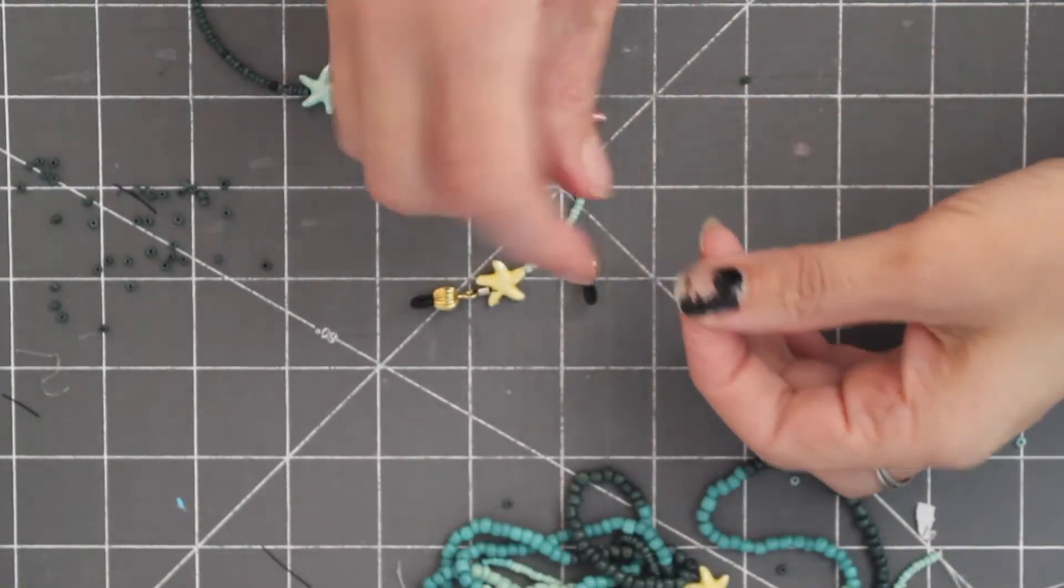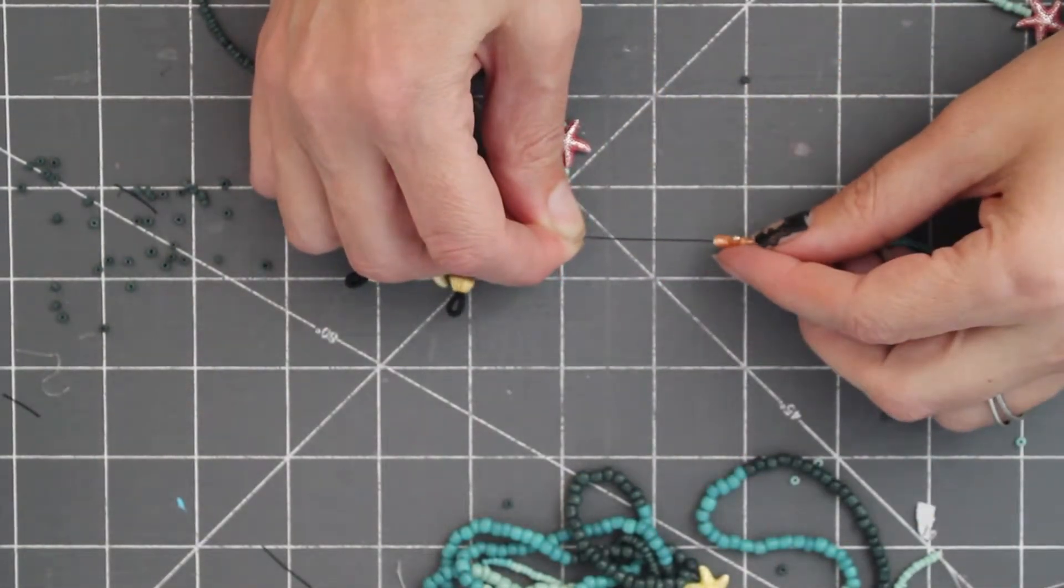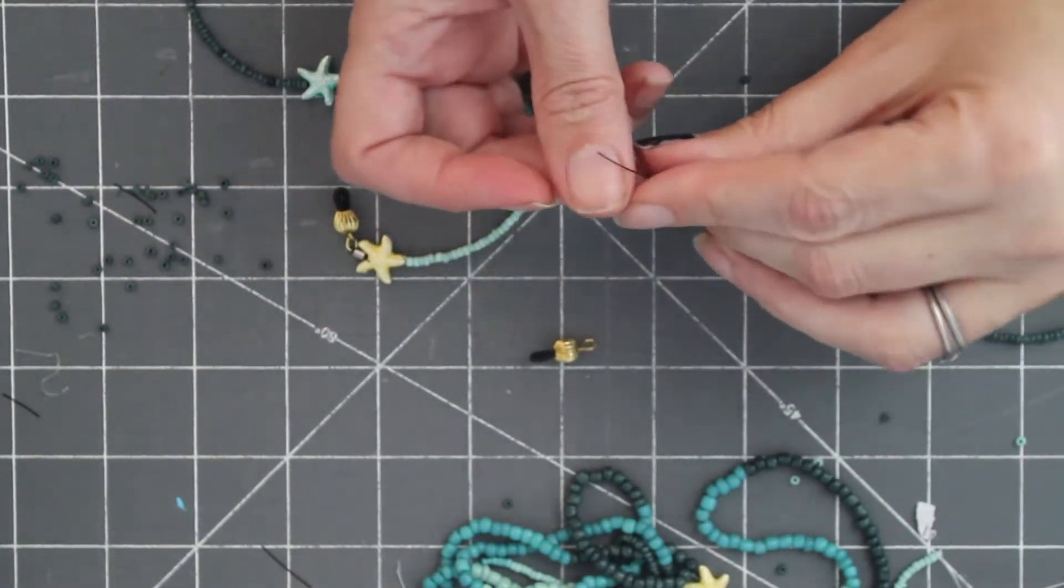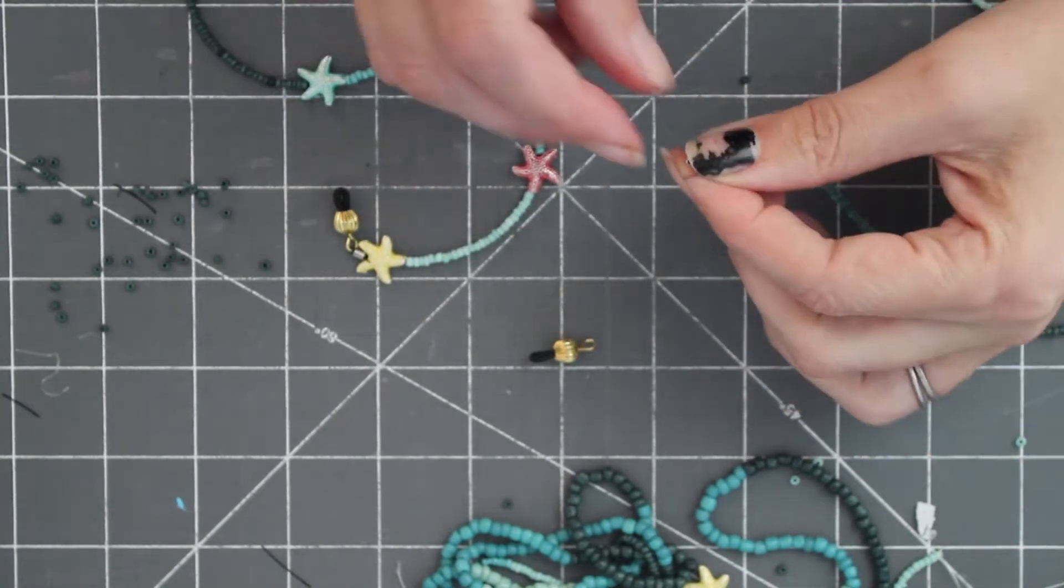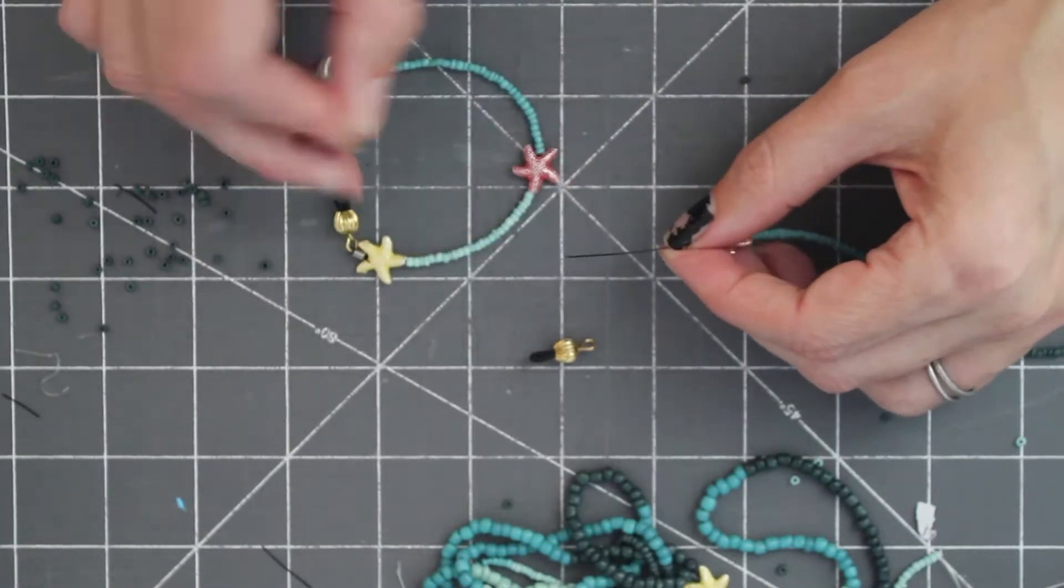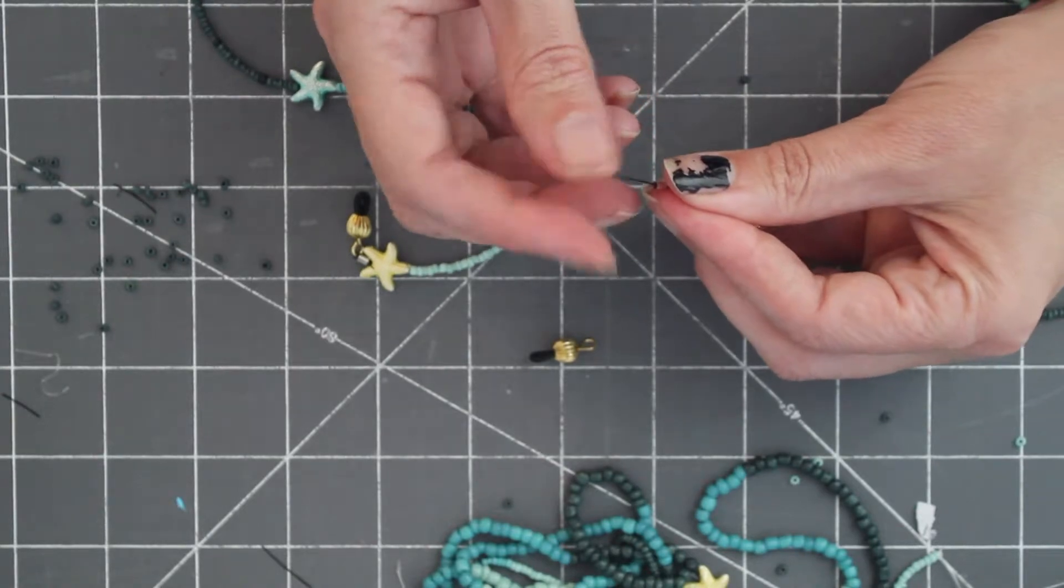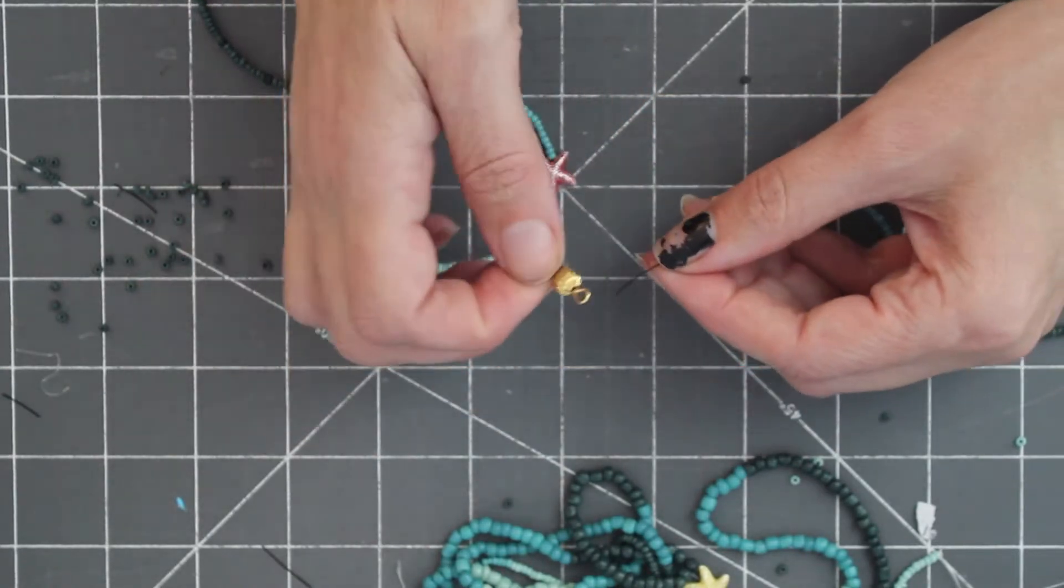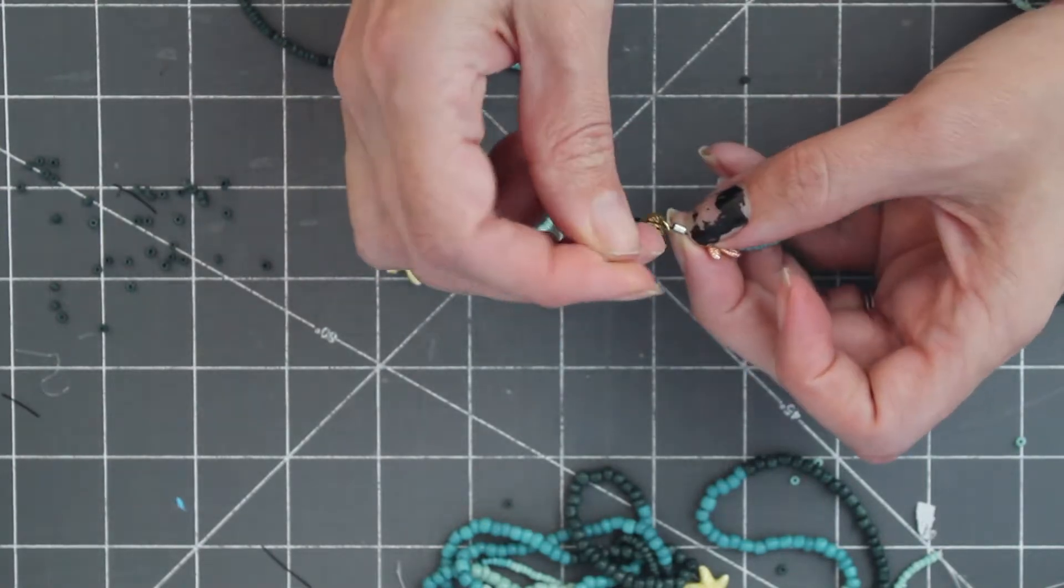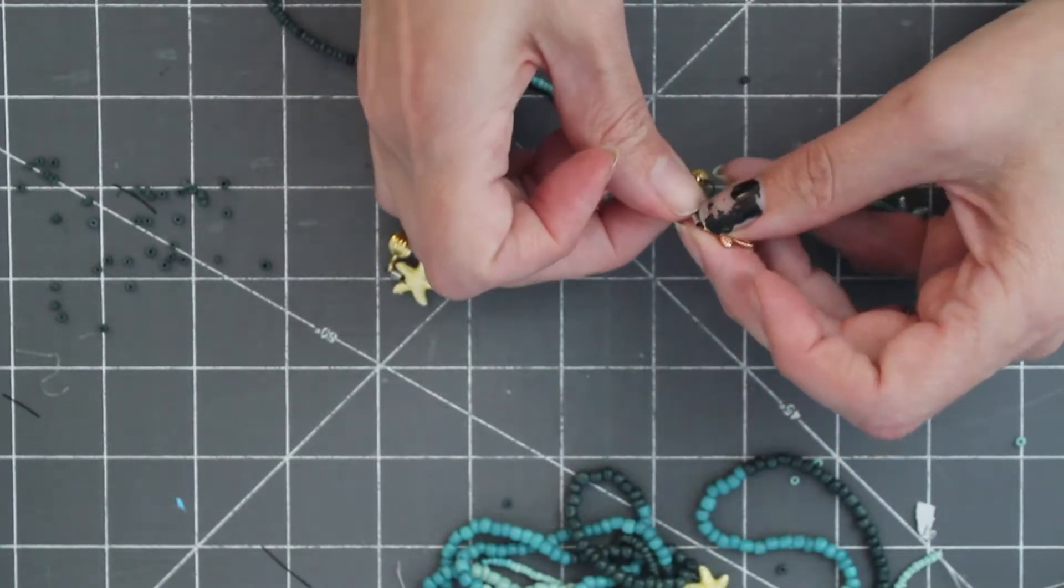So I started to run out of room, so I decided to end it there. Because you need about an inch and a half to two inches to end it. To put it in the eyeglass holder. I measured this out and it came out to 27 inches. So we're going to finish it off just like we did in the beginning. You put in your crimp bead and your eyeglass holder. Be careful that the eyeglass holder doesn't pass the crimp bead.